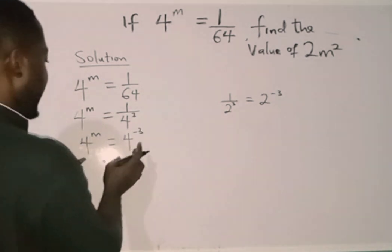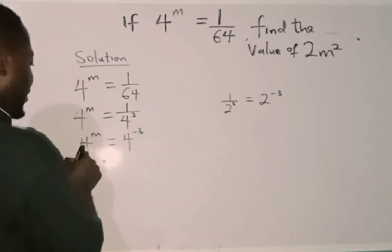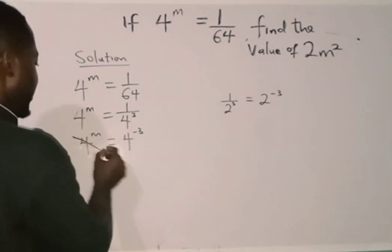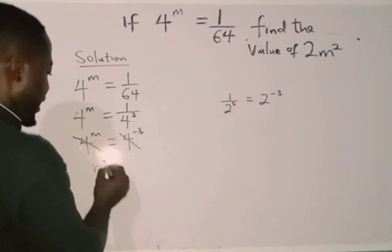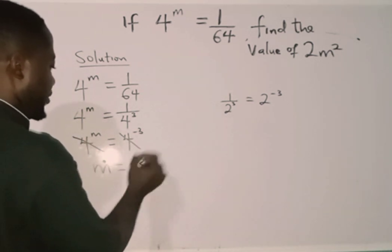Now, since the bases are the same, we have 4 here and 4 here, they are going to cancel out each other. Then I'm going to equate the powers. So the power will now be m equals minus 3.